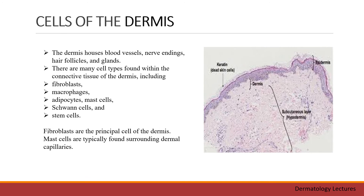The dermis houses blood vessels, nerve endings, hair follicles, and glands. There are many cell types found within the connective tissue of the dermis, including fibroblasts, macrophages, adipocytes, mast cells, Schwann cells, and stem cells. Fibroblasts are the principal cell of the dermis. Mast cells are typically found surrounding dermal capillaries.